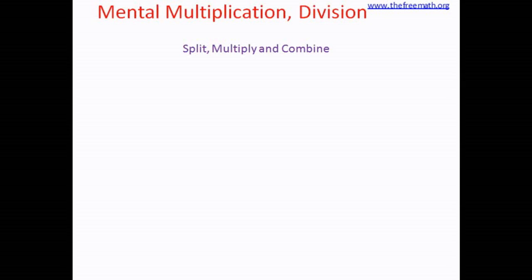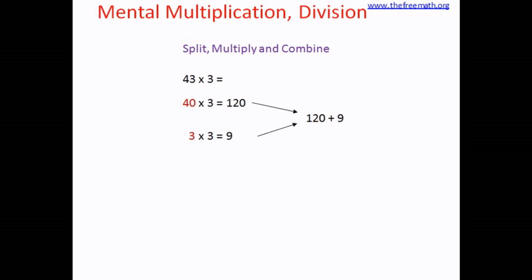Let's see how to do mental math for multiplication and division. Let's start with multiplication. The first method is split, multiply, and combine. Let's take an example: multiply 43 by 3. We split 43 as 40 and 3, then multiply each part by 3. 40 threes are 120, because 4 threes are 12.